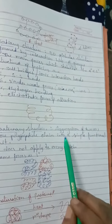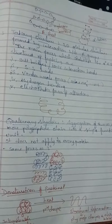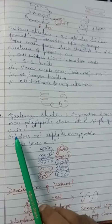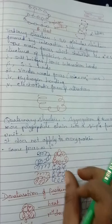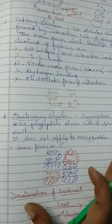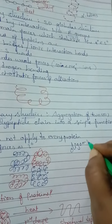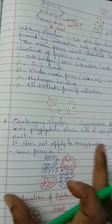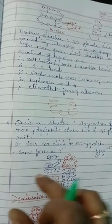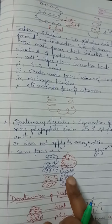The quaternary structure involves aggregation of two or more polypeptide chains into a single functional unit. Some proteins are composed of two or more polypeptide chains called subunits, and such proteins are called oligomers. These subunits form aggregates, and the spatial arrangement of subunits relative to each other is known as the quaternary structure.